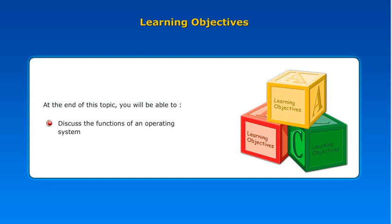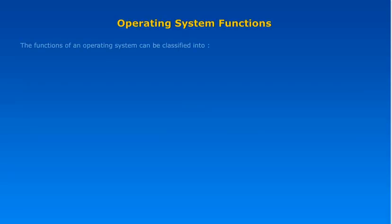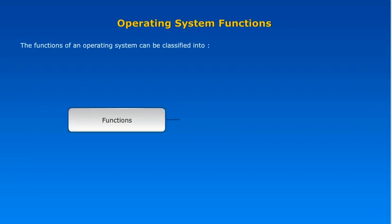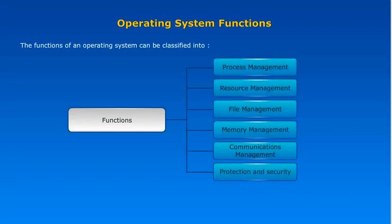The functions of an operating system can be classified into Process Management, Resource Management, File Management, Memory Management, Communication Management, and Protection and Security.